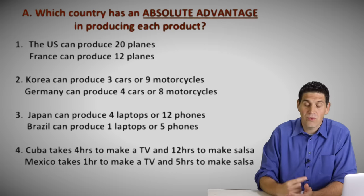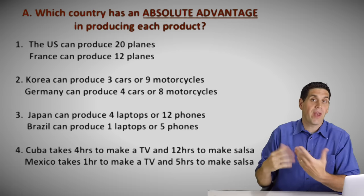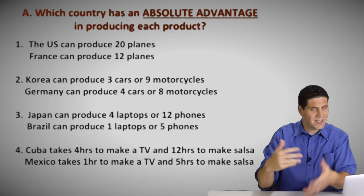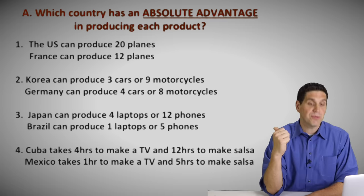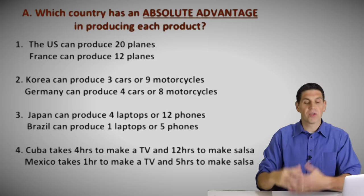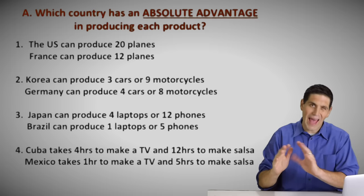For the first one, the U.S. produces 20 planes and France only produces 12. So the United States has an absolute advantage in the production of planes. I'm starting with absolute advantage, making sure you get that, and then we'll move on. Number two, Germany has an absolute advantage in the production of cars and Korea has the absolute advantage in the production of motorcycles — Germany can produce more cars and Korea can produce more motorcycles.